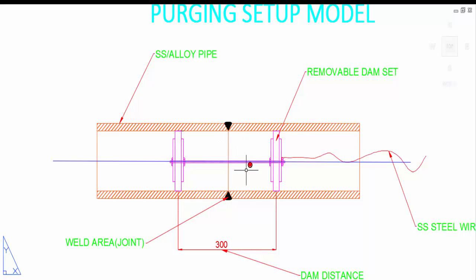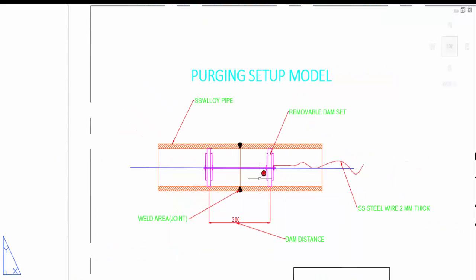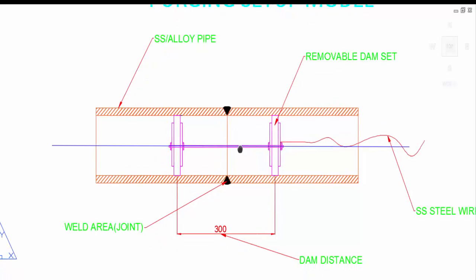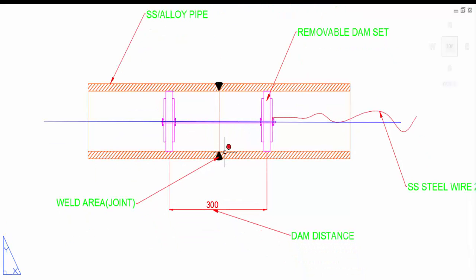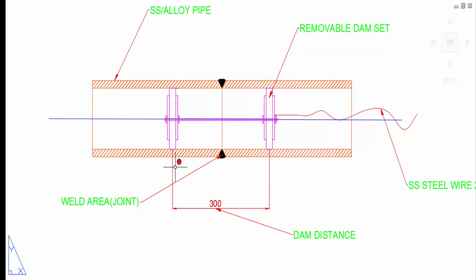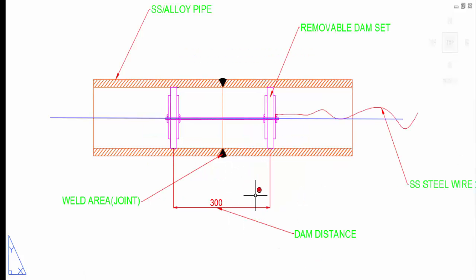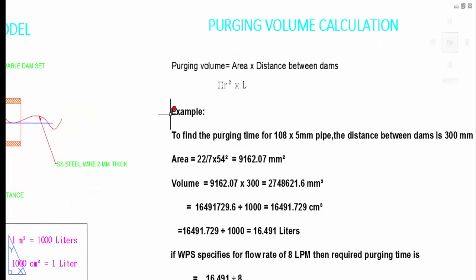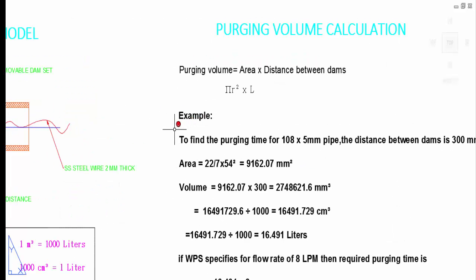Minimum clearance between the dam and joint is 150mm. Between two dams is 300mm. To calculate volume of gas for purging, we can use argon or nitrogen gases.